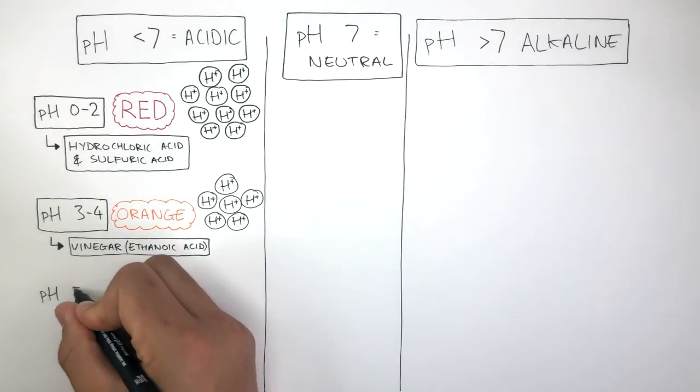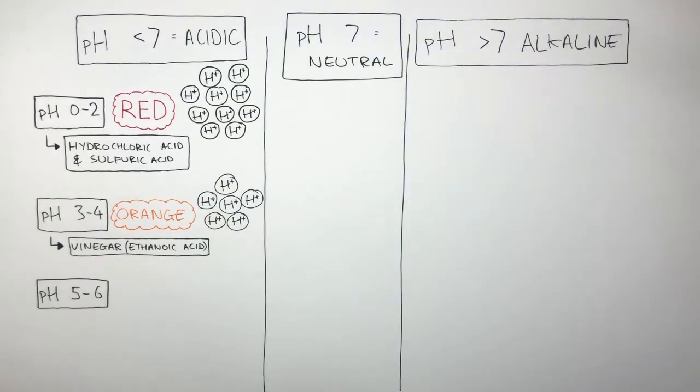A pH of 5 to 6 will cause Universal Indicator solution to turn yellow as there are the lowest amount of hydrogen ions in solution. Black coffee and rainwater are examples of solutions which have a pH of between 5 and 6.